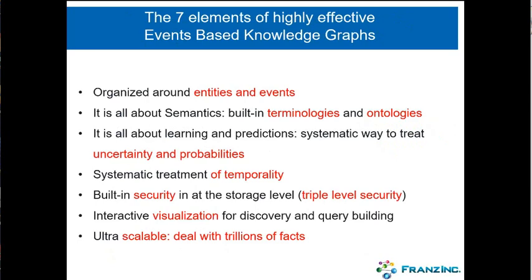If you want to build your own event-based knowledge graph, what do you need to do to get a high-quality knowledge graph that makes it very easy to do machine learning, reporting, and ad-hoc queries? I'm going to go into a few factors. One is centering everything around entities and events and building in your terminology and ontologies. Then I'll talk about learning and predictions, how we found a systematic way to deal with that, and how we model and visualize the temporal buildup of event graphs.